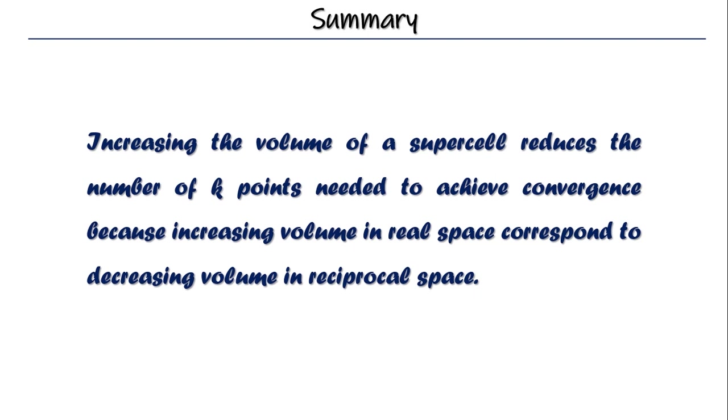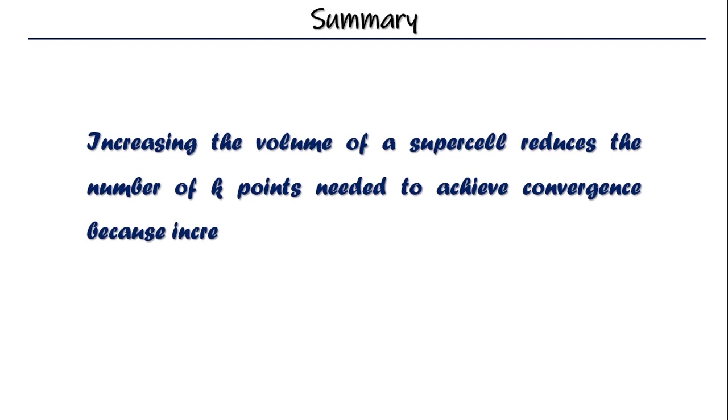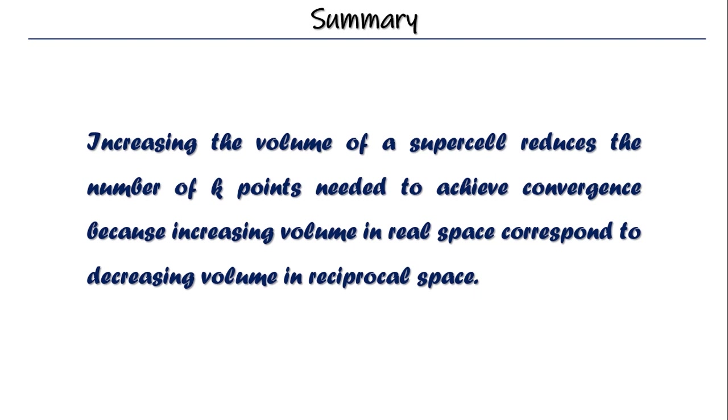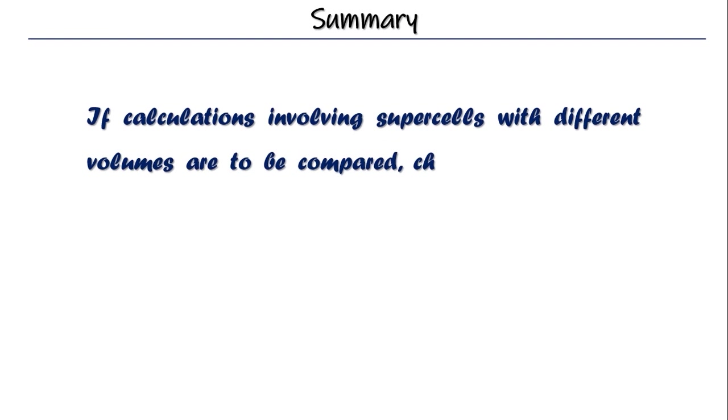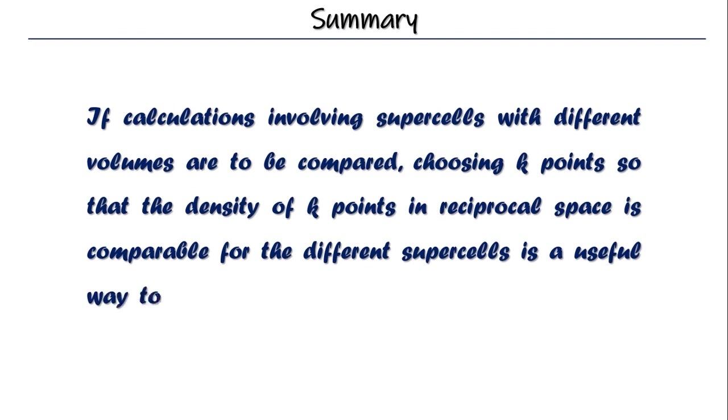The fourth point is, if calculations involving supercells with different volumes are to be compared, choosing k-points so that the density of k-points in reciprocal space is comparable for both the supercells is a useful way to have comparable levels of convergence in k-space. What should be comparable is the density of k-points, not the number of k-points.